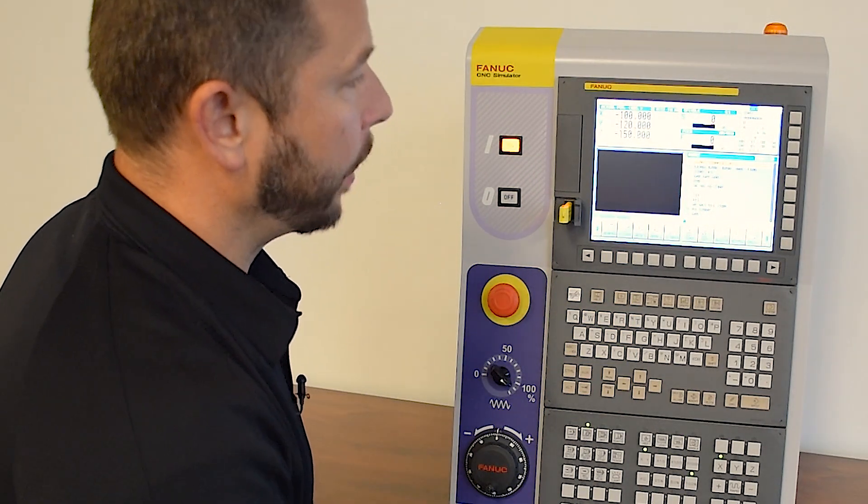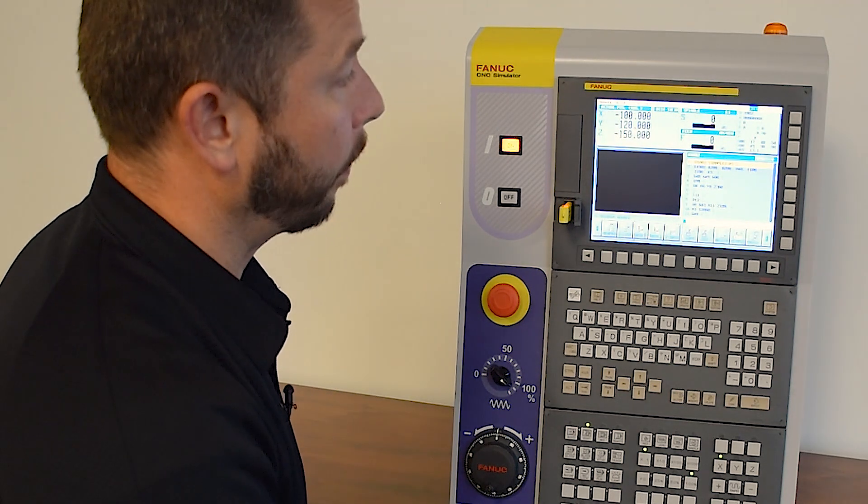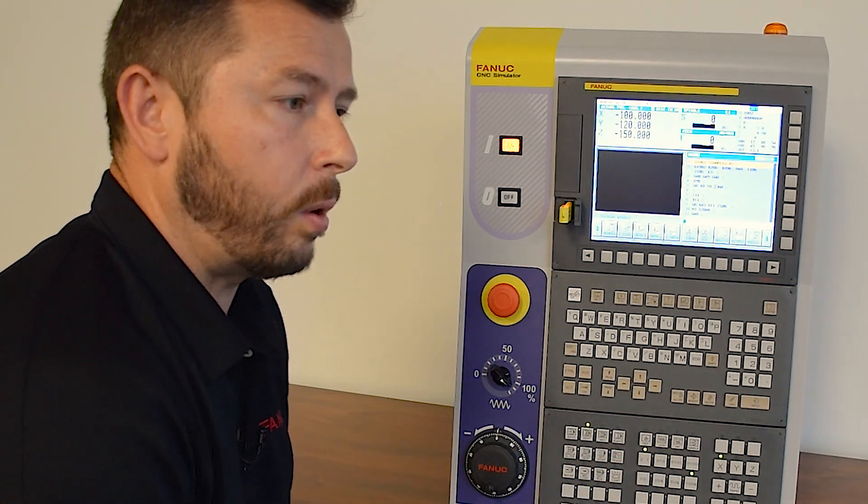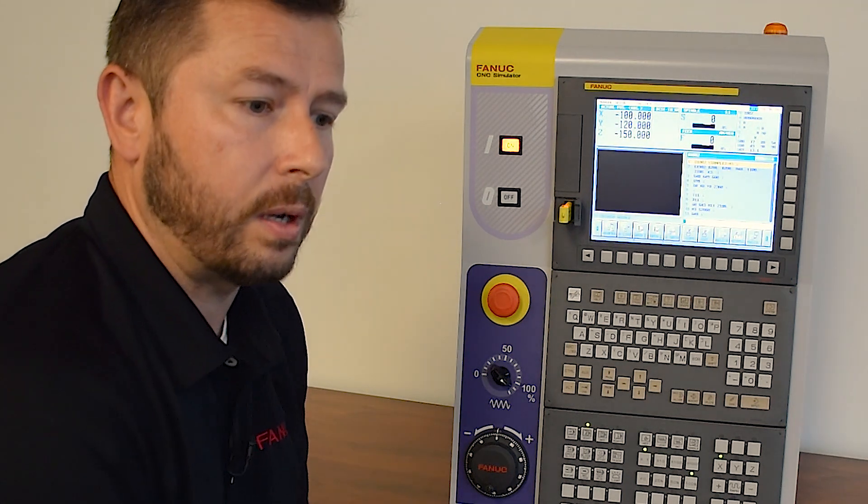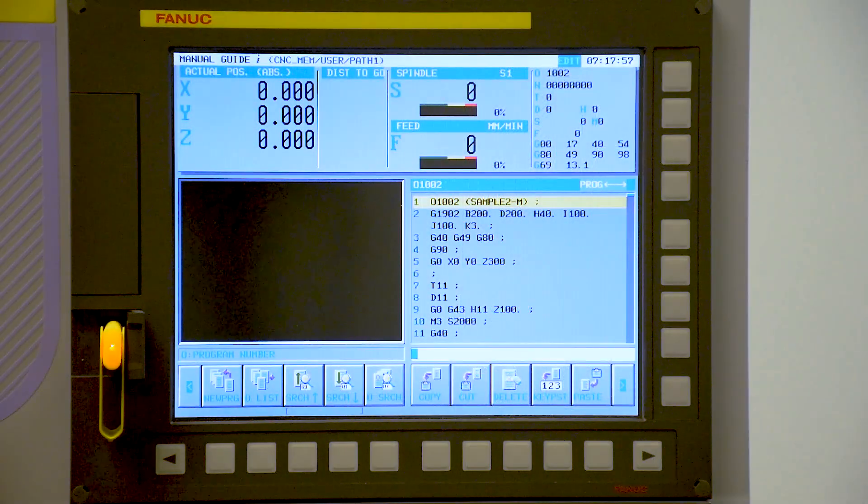Additionally within Manual Guide Eye, we can run a simulation of this part program, but to do that we also need to tell the control the blank material size and the radius information of the tool. So we do need to input some more data.